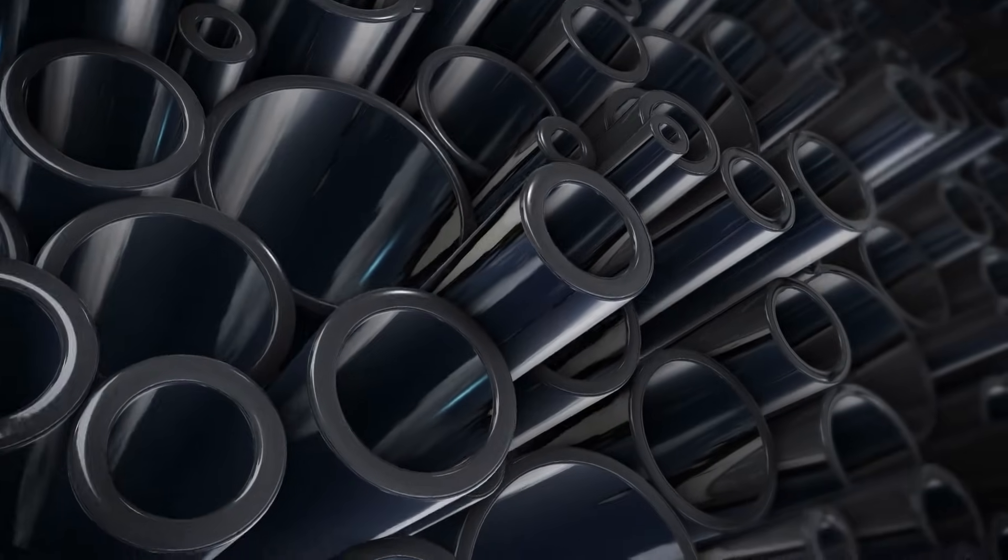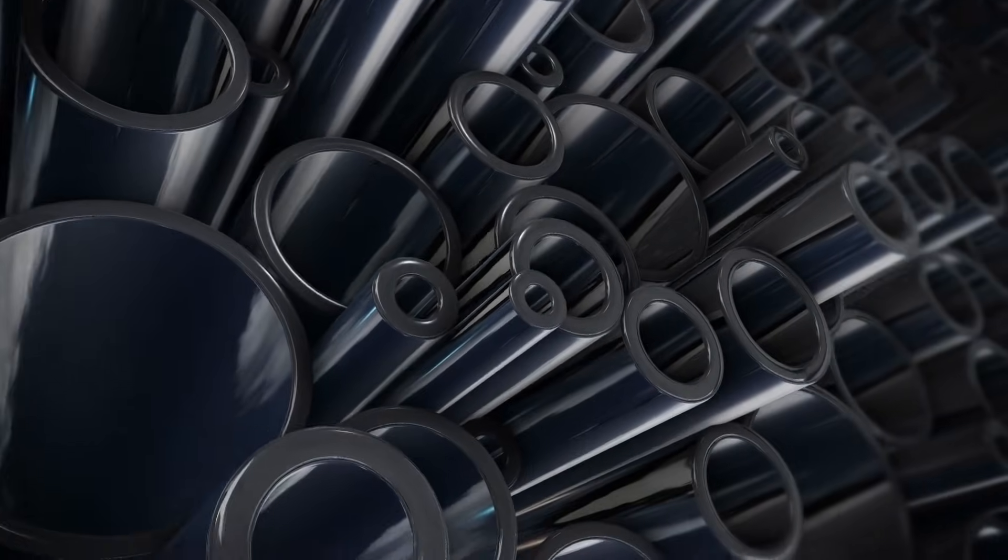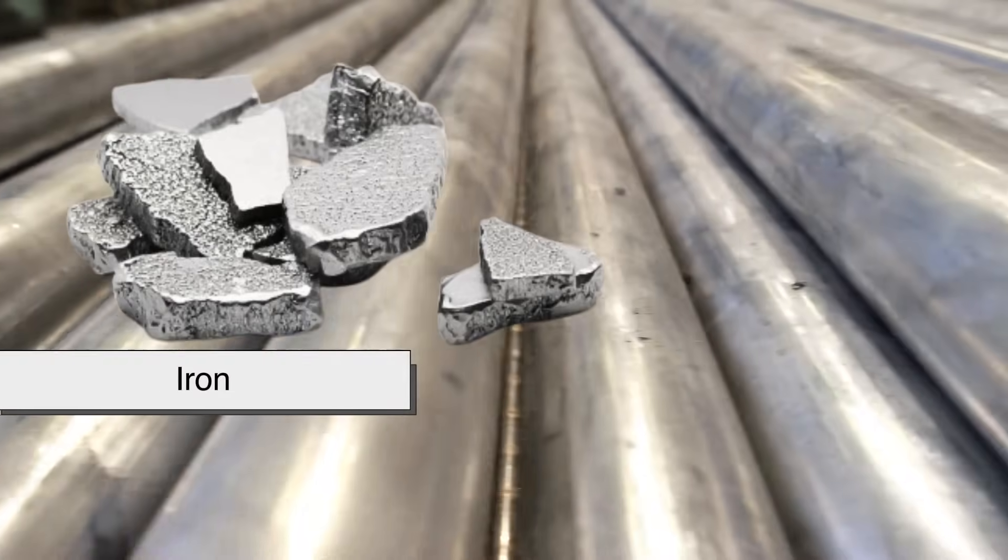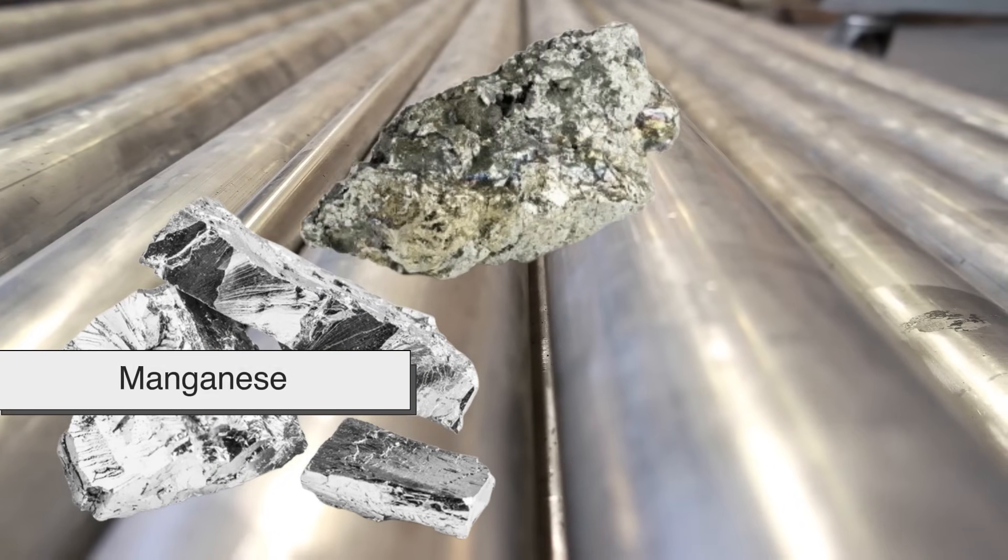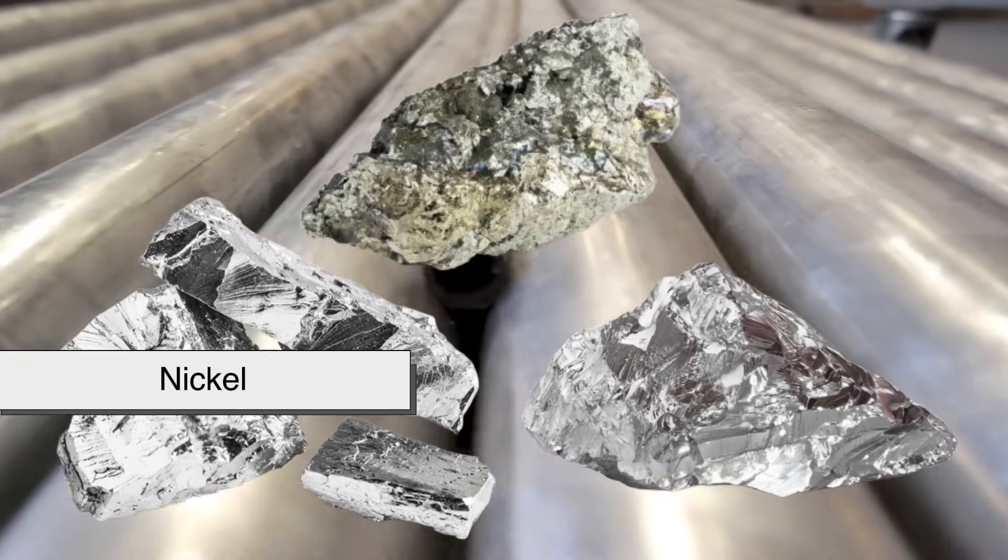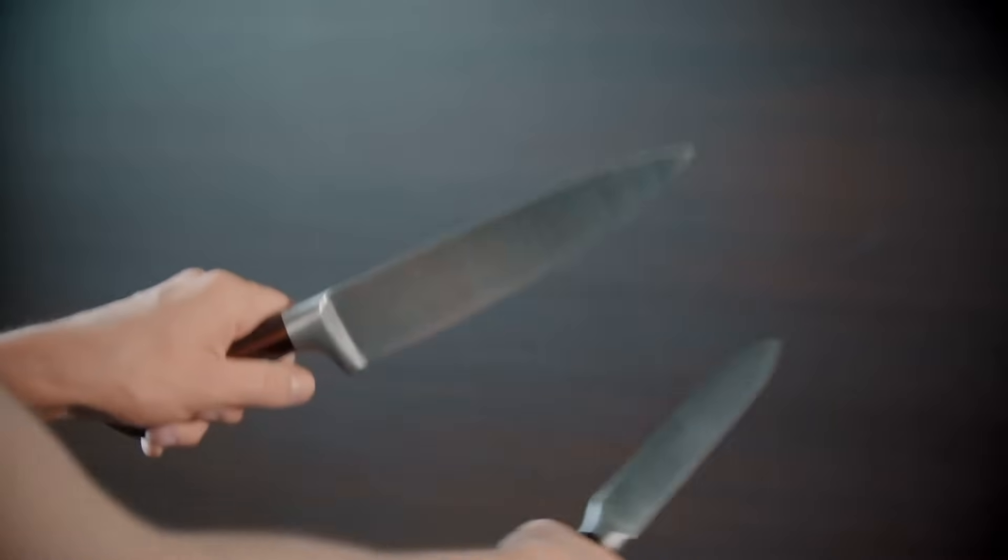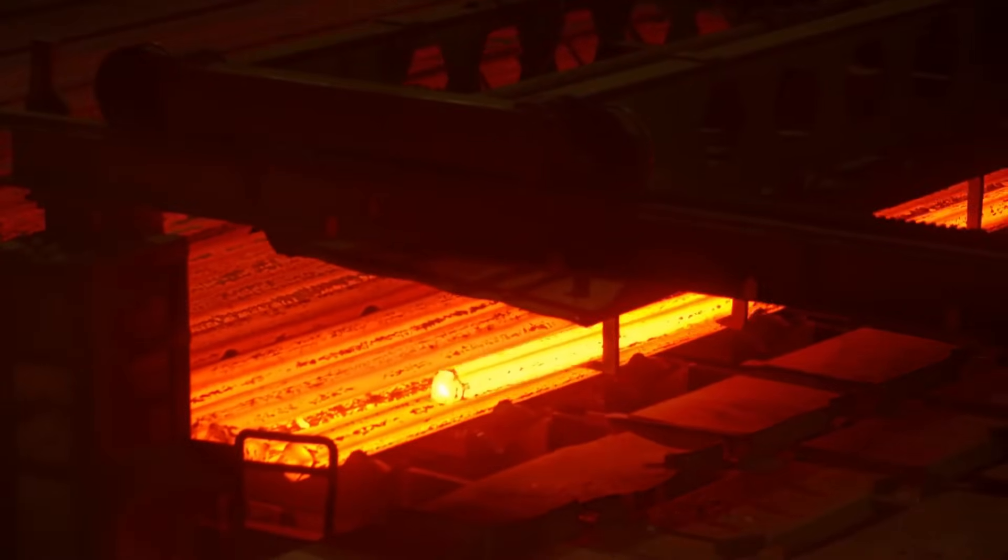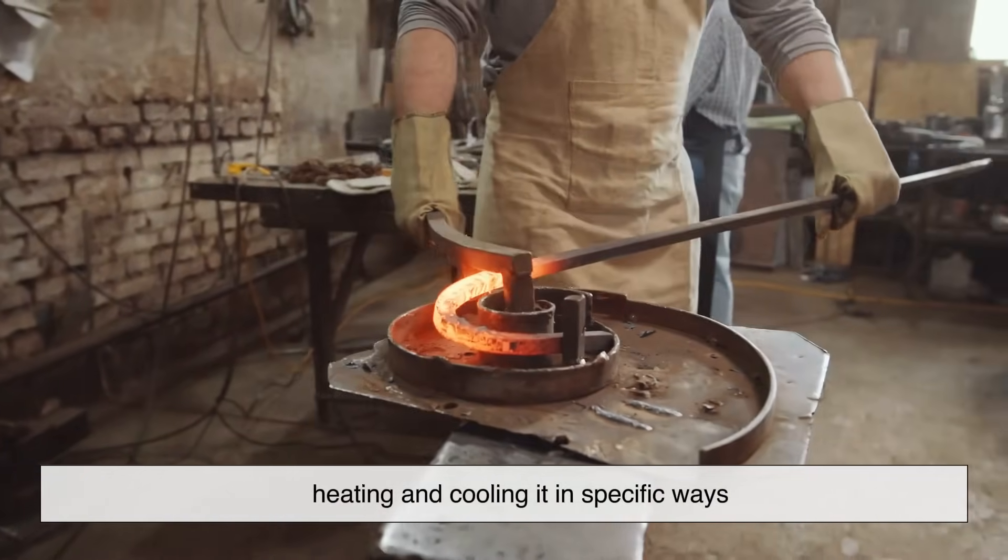Before we get into the color shift, let's take a quick look at what steel actually is. Steel is an alloy mostly made of iron with a small percentage of carbon and sometimes other elements like chromium, manganese, or nickel depending on its intended use. It's everywhere—used in buildings, tools, cars, knives. Steel's properties change depending on how it's treated. You can make it hard, soft, flexible, or brittle just by heating and cooling it in specific ways. And that's where temperature and color come into play.